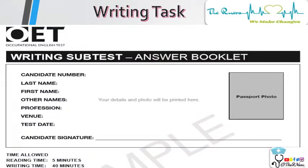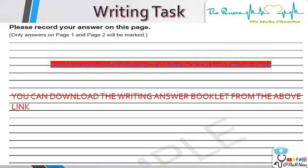For a newbie, here is how the answer booklet looks. You have to write your candidate number, last name, first name — please note if you have any other names, do mention that — your profession, which must be nursing or whichever profession you belong to, the venue, and the test date on which you are writing the test. You can download this booklet from the URL given in the description box below.